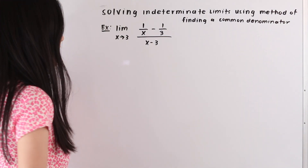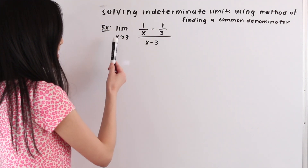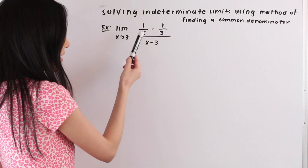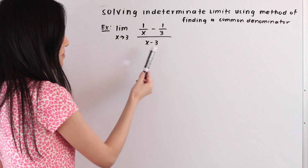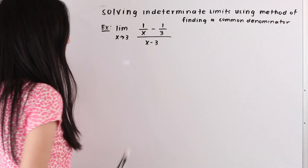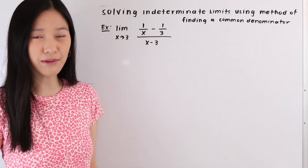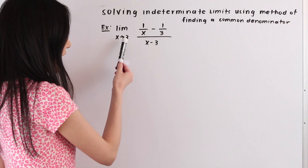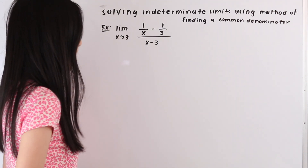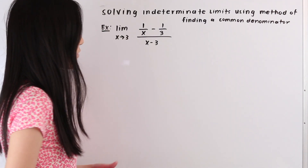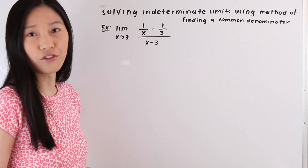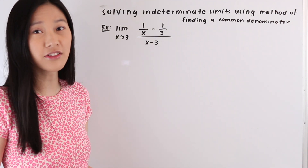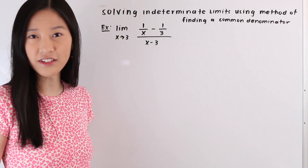So in this first example here we have the limit as x approaches 3 of 1 over x minus 1 third, over x minus 3. The first thing that we always do when we're solving a limit problem algebraically is we take this value for a and plug it into our function f of x, and if we do that here we see that we get 0 over 0, which is an indeterminate form, which means we need to use another method to solve this limit.